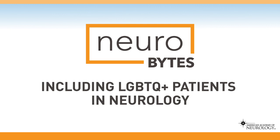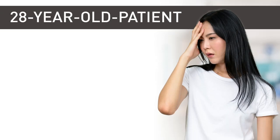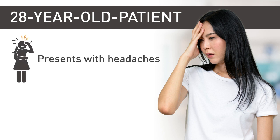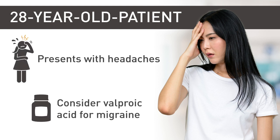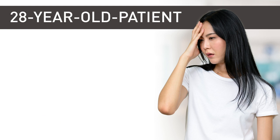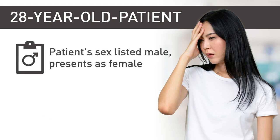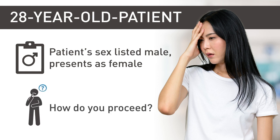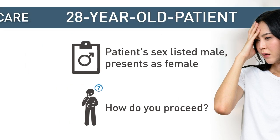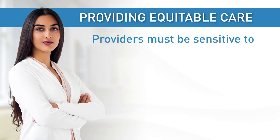Reese is a 28-year-old patient who presents with headaches. After examination, you consider valproic acid for migraine prophylaxis. Reese's sex is listed as male in the chart, but they present as female. As the chart does not specify gender identity, you're unsure how to proceed.